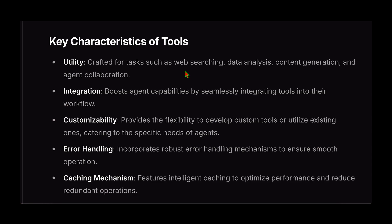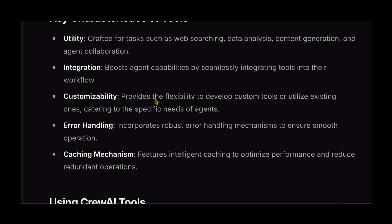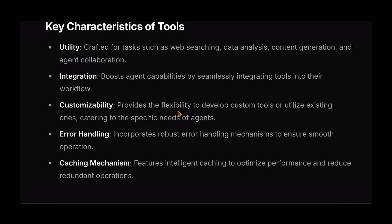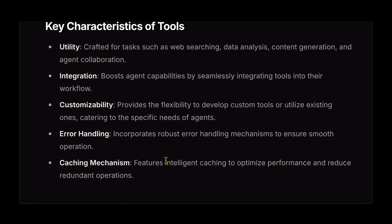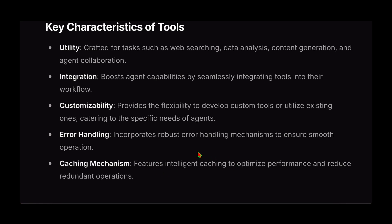Let's look at the key characteristics of tools in CrewAI. First is utility — tools are crafted for web search, data analysis, content generation, and agent collaboration. Next is integration — tools seamlessly integrate with agents to make them much more capable. Then customizability — tools are quite flexible, allowing you to develop custom tools catering to specific needs of agents. Next is error handling — tools incorporate robust error handling to ensure smooth operation. Finally, there's a caching mechanism, which we'll look at in a code example.